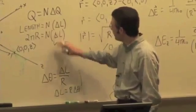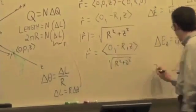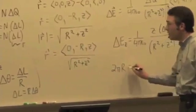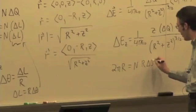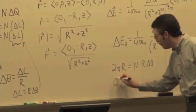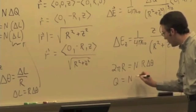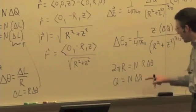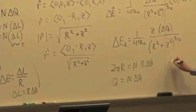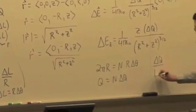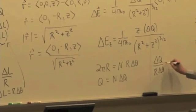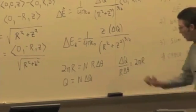Plug that in, and you get 2 pi r is equal to n times r times delta theta, but it's also q is equal to n times delta q. So I take the ratio here.